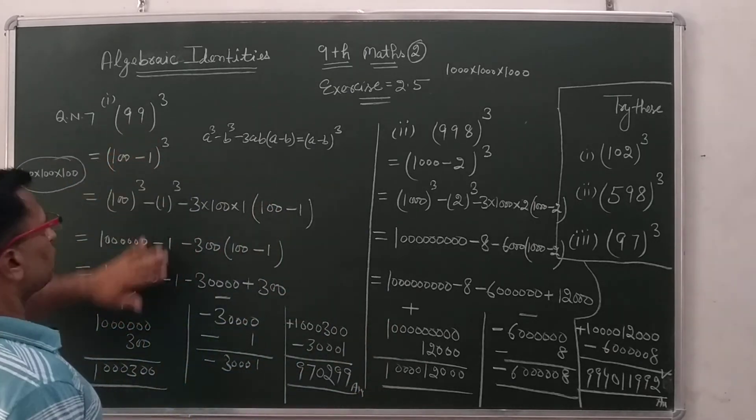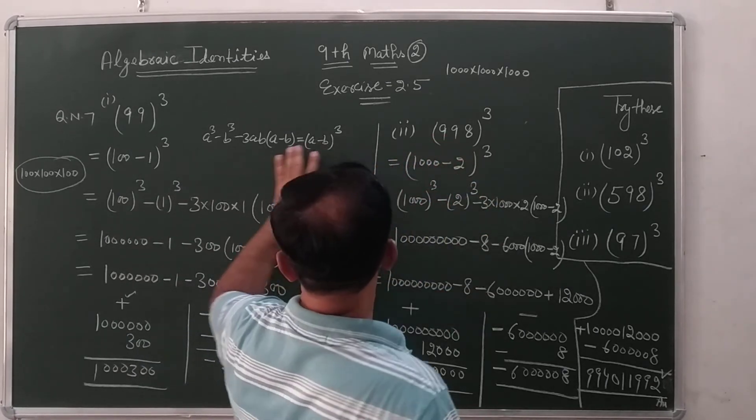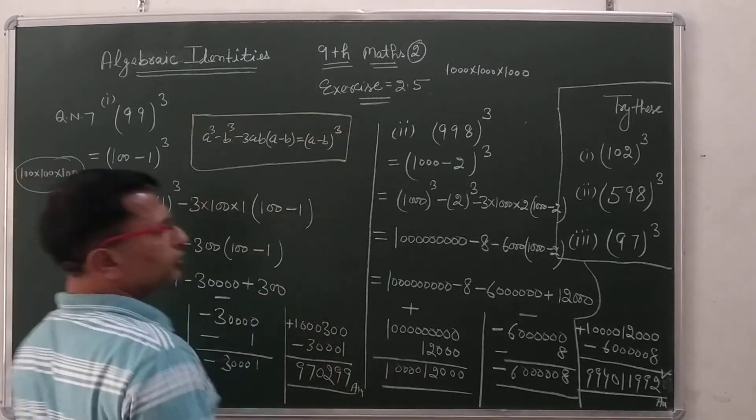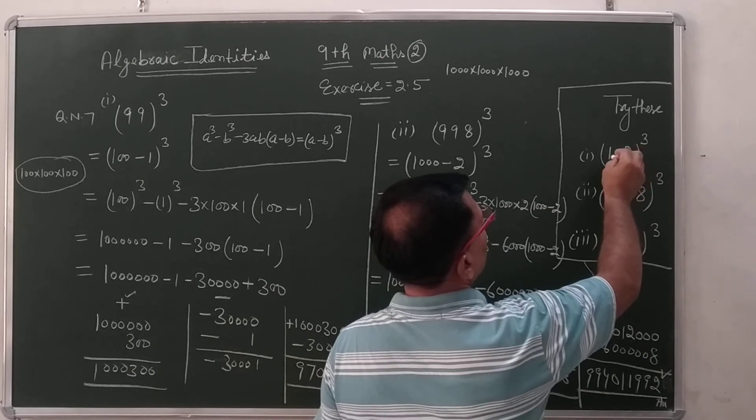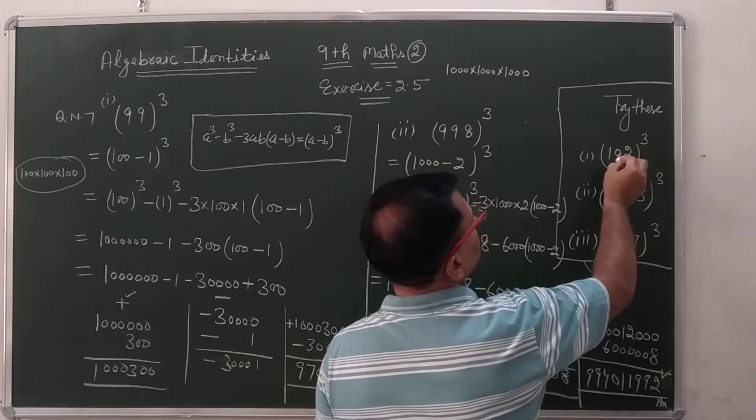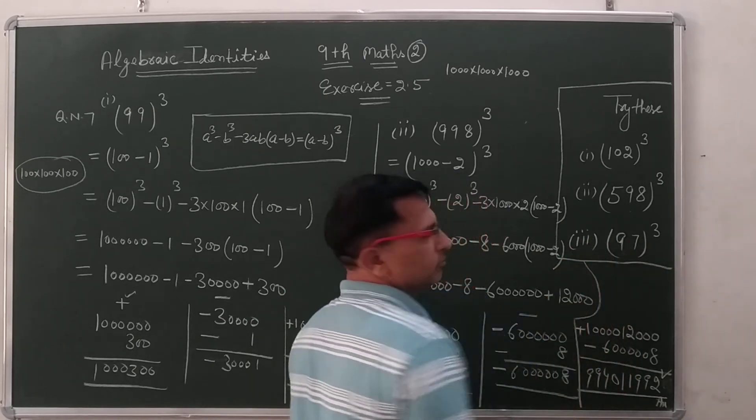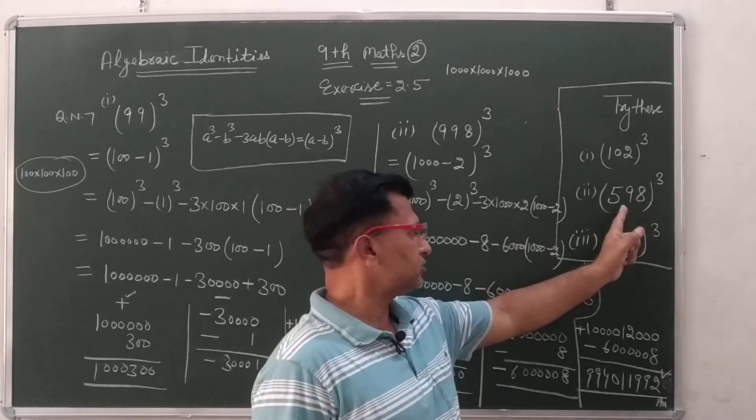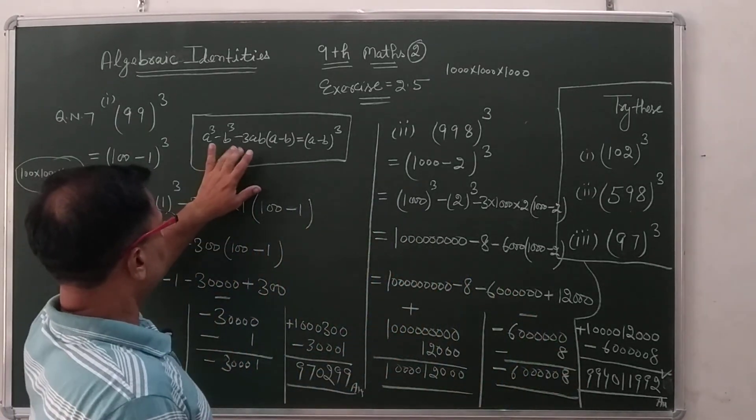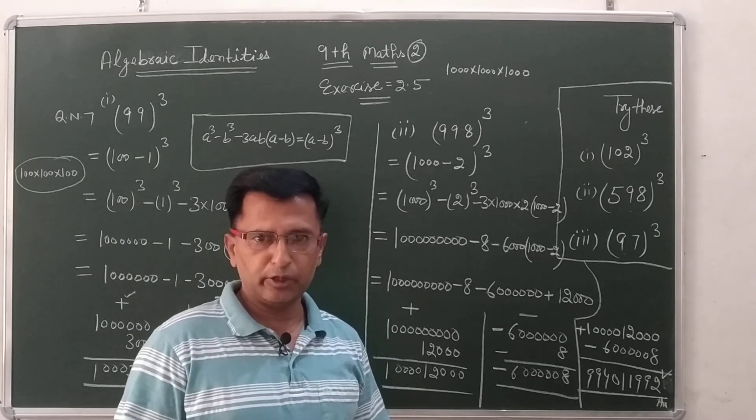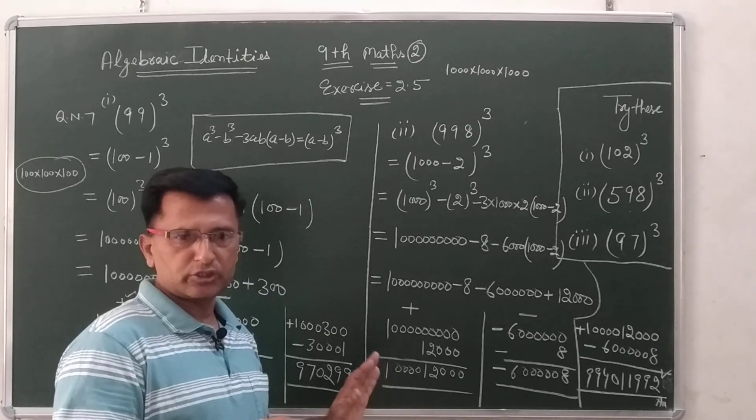So it is the 99 all cube 100 minus 1. It is the 998 and 1000 minus 2. A minus cube wali identity laghe ghi. Jo bhi 90 jitke hotte hain 100 minus 1, 1000 minus 1. Like this. And you will try these 3 questions: 102 cube, 598 cube, 97 cube. You can write this 100 plus 2. You can write this 600 minus 2. And you can write this 100 minus 3. Please you try yourself like these examples and according this identity. Thanks.